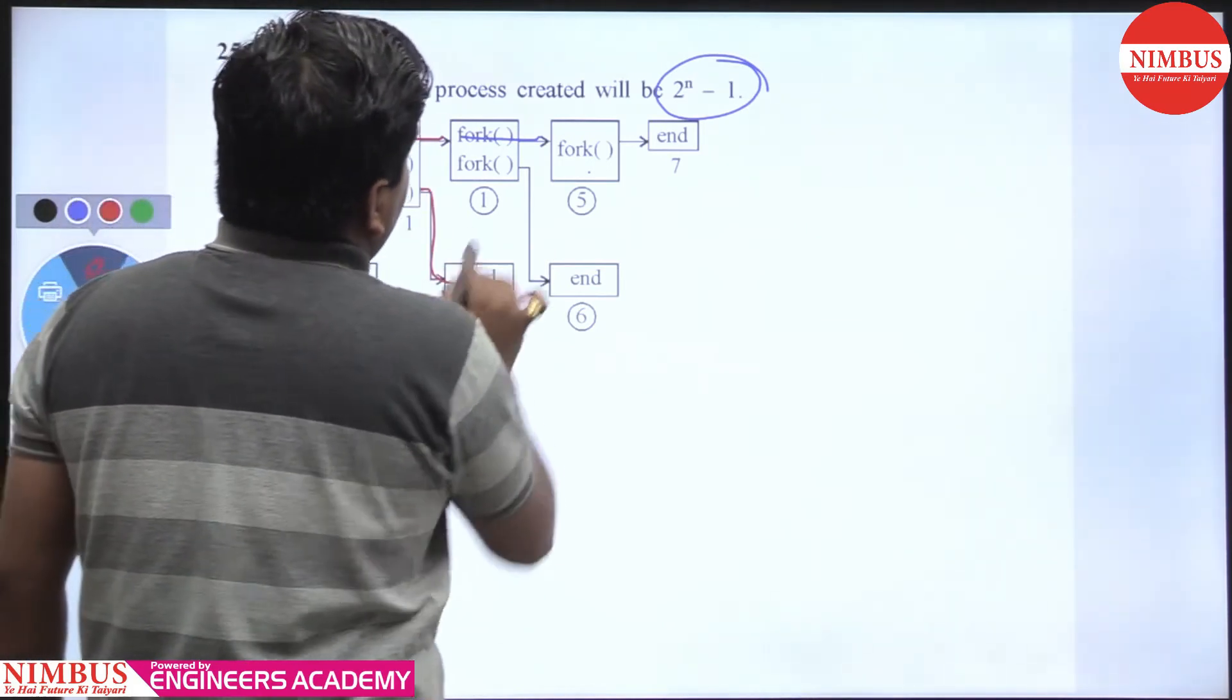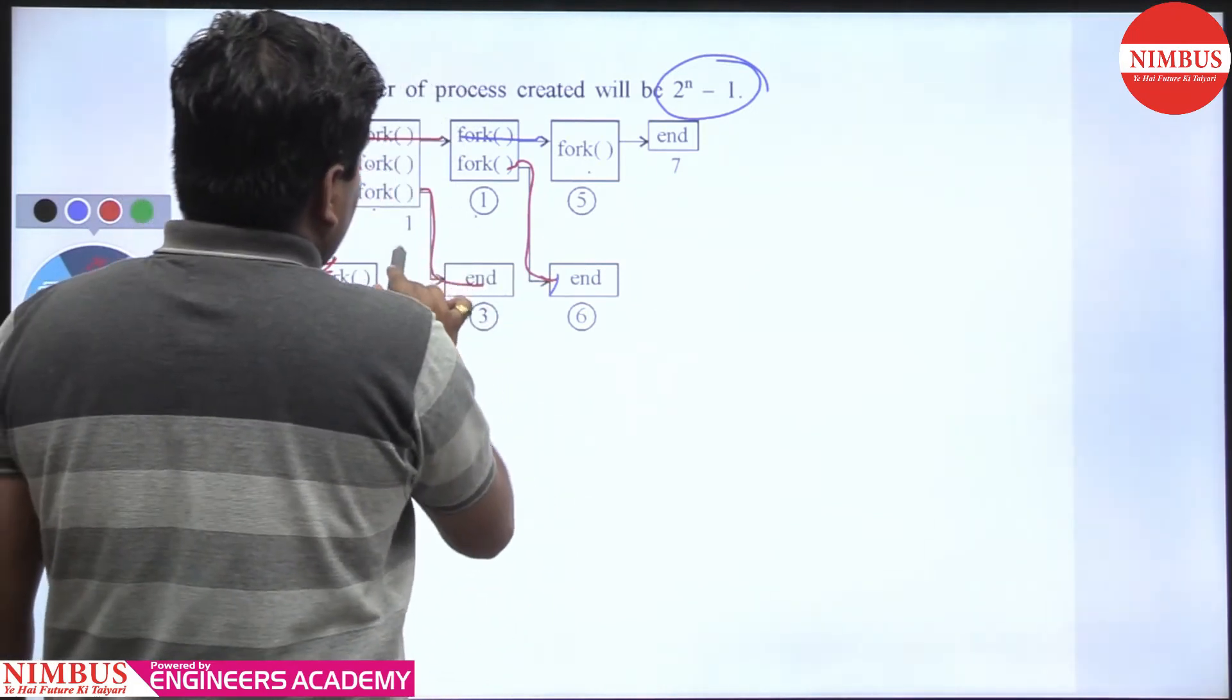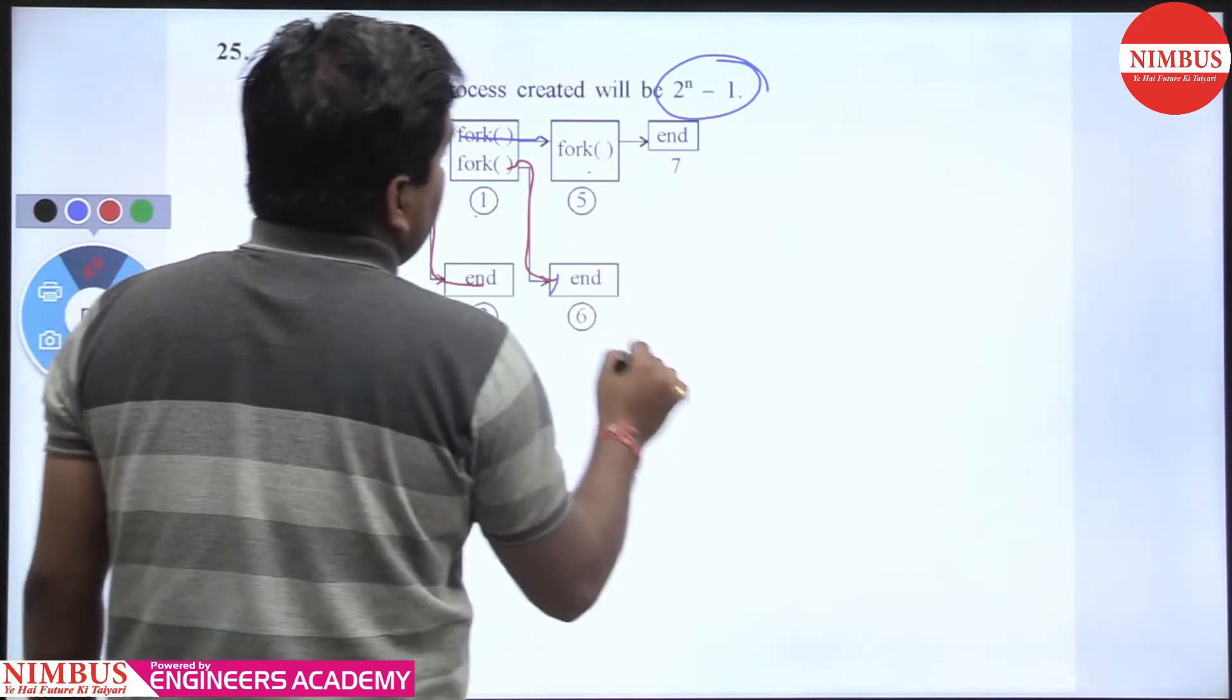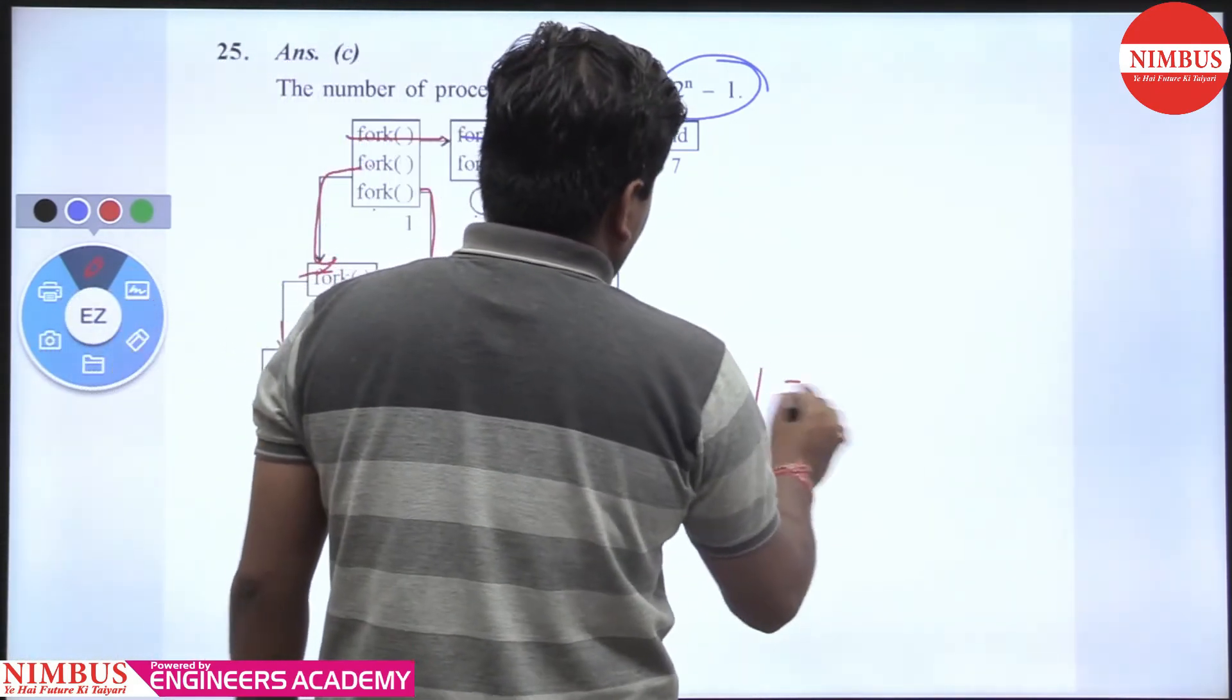1, 2, 3, 4, 5, 6, and 7. Or you can say: 3 times fork is called, so 2 raised to power 3 minus 1, that is 7.